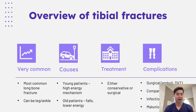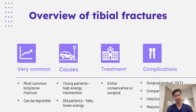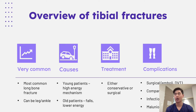In terms of the causes of tibial fractures, they can be classified into two different mechanisms. Generally in younger patients, you would see high energy mechanisms like car crashes and athletic incidents, whereas in older patients it might be lower energy falls. In terms of treatment, there are two different pathways: conservative management or surgery. Complications to watch for include emboli, DVT, compartment syndrome, infection, and arthritis.